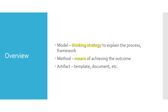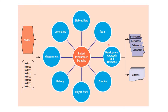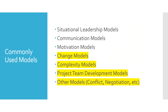What is a model? A model is a thinking strategy to explain the process and the framework. Models and methods are used as an input to the project performance domains, and accordingly you get an output of artifacts or deliverables. Yesterday's video, we talked about situational leadership model, communication model, and motivation models. Today we'll discuss change models, complexity models, project team development models, and other models like conflict models and negotiation models.